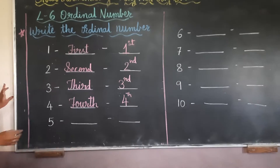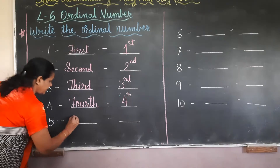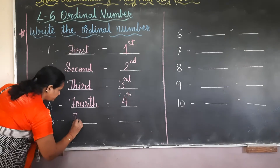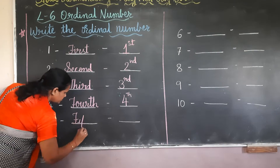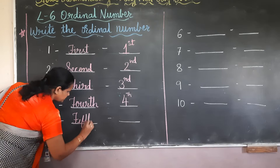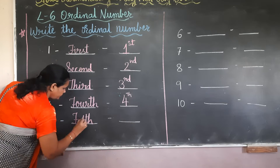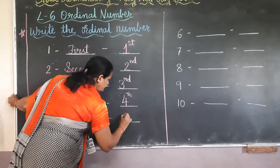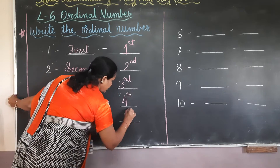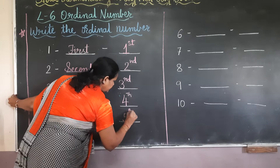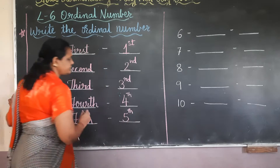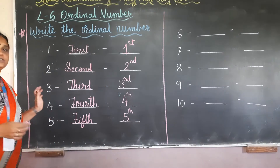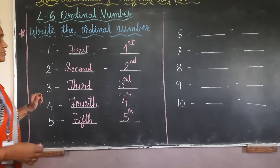For 5th, I got the 5th position. The spelling is fifth. And in the short form, we write 5 and TH — 5th position.